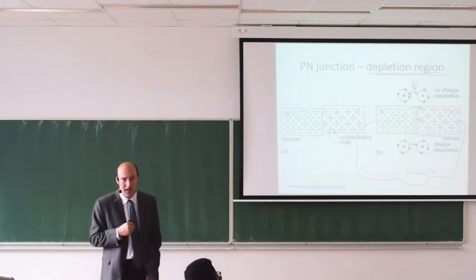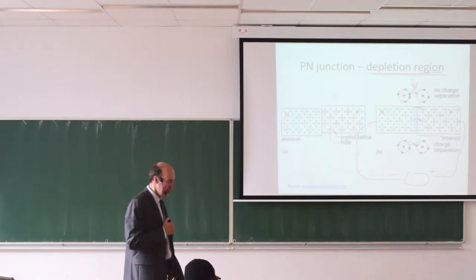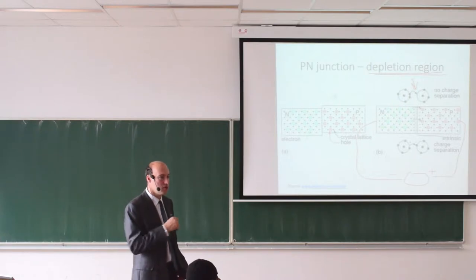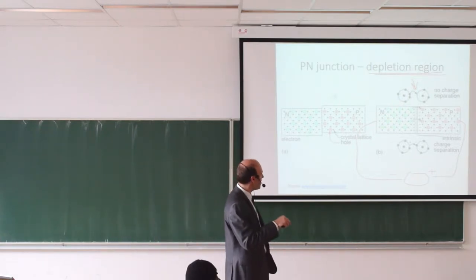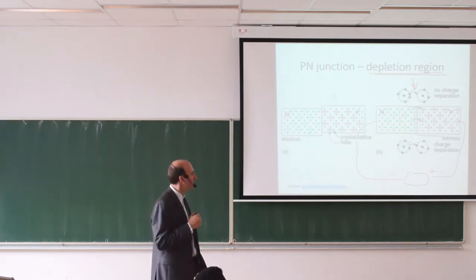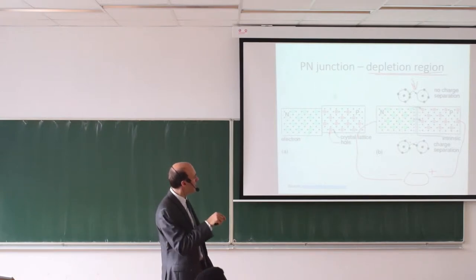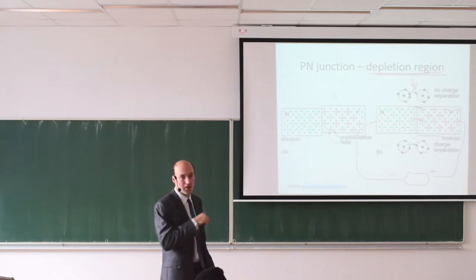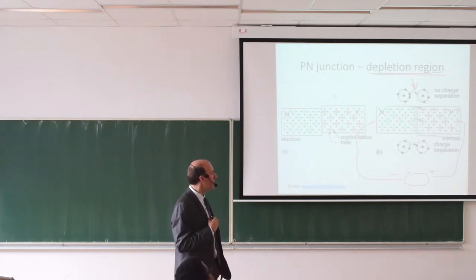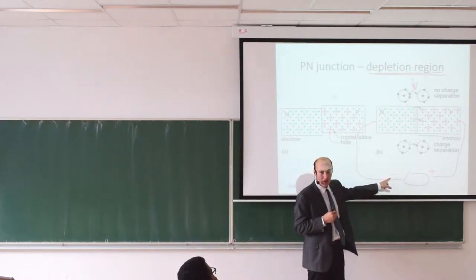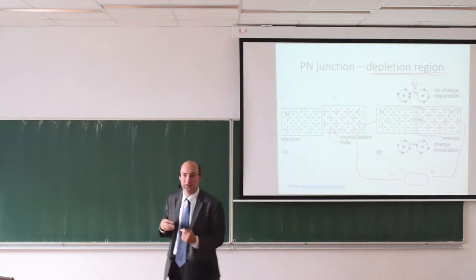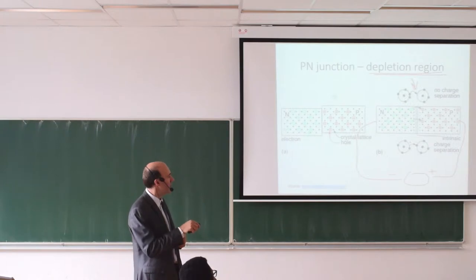We will use this p-n junction in diodes. Diodes are components with a single p-n junction. Next week we will discuss transistors, which have two p-n junctions. With an external power supply, the polarity determines if charge can pass from p to n or vice versa. We can connect the junction both ways — negative terminal here and positive there, or reversed — and this tells us if current is flowing or being blocked by the intrinsic region.